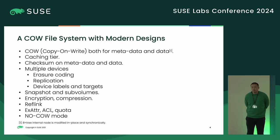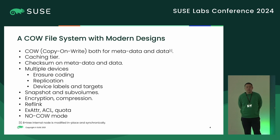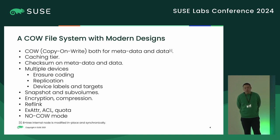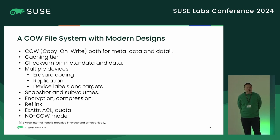BcacheFS supports snapshots and sub-volumes. Because of the B-tree, it is a little bit simpler to implement, I think, comparing to Btrfs.